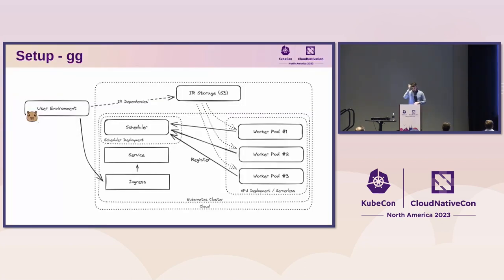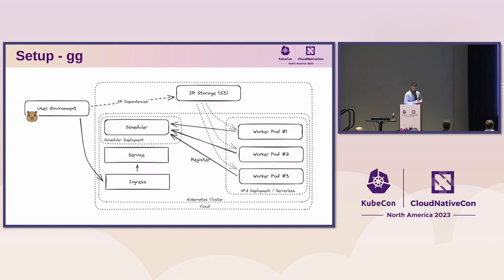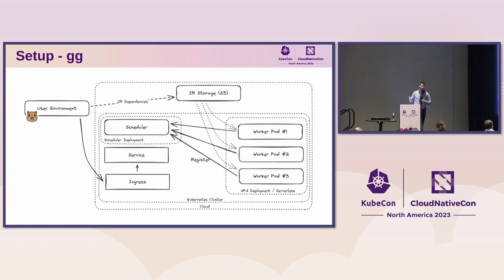That night I went home and thought: there should be something that does what I want. And somewhere in a blog post comment I saw someone pointing to a project called GG. The idea is to implement this on Kubernetes with a deployment of worker pods and a scheduler where the worker pods register to the scheduler, similar to how sccache works.